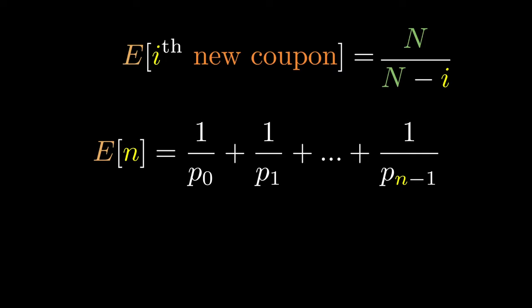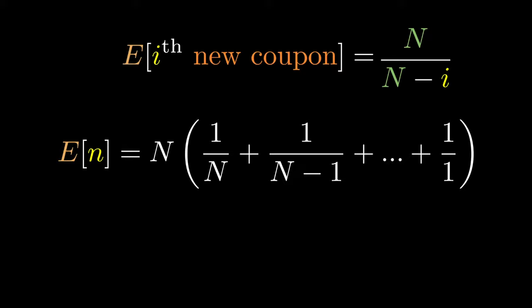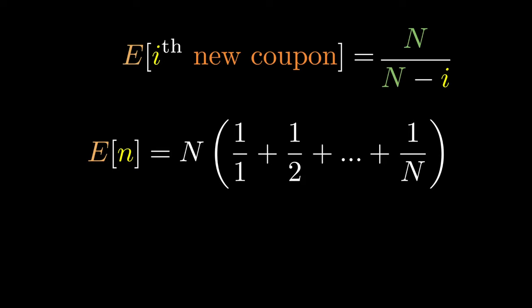And above we derived that 1 over p_i is equal to N over (N - i). So if we write this whole thing up, we get this really long sum which we can factor N from. So we get N times (1 over 1 plus 1 over 2 plus 1 over 3 plus dot dot dot until 1 over N). We call this the Nth harmonic number.